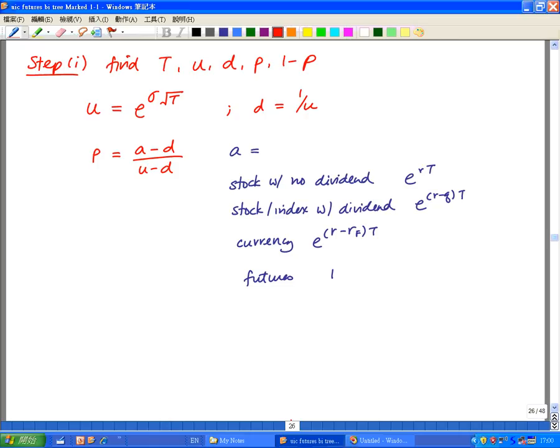So for a, if it's a stock with no dividend, we'll put in e to the power rt as our a. r is our risk-free rate.